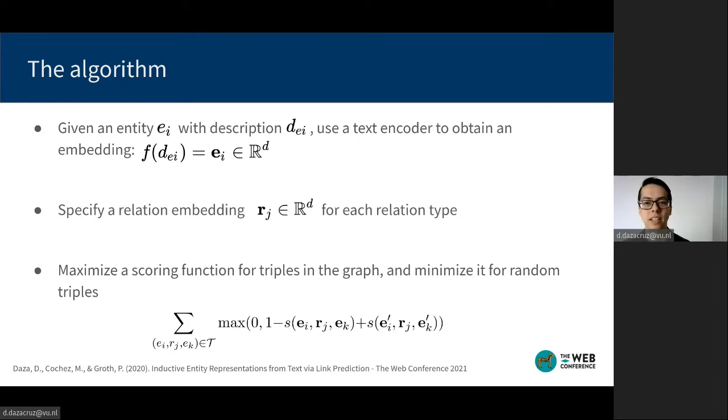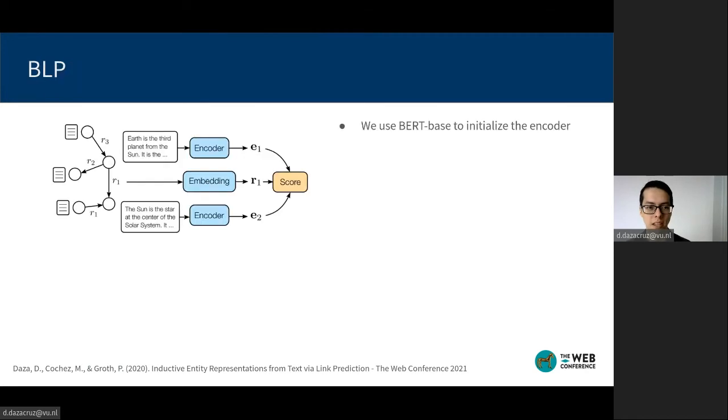These are obtained by corrupting an observed triple, for example, by replacing one of the entities by a randomly sampled entity. In our work, we study the use of a transformer-based neural network as the encoder whose weights are initialized with BERT.